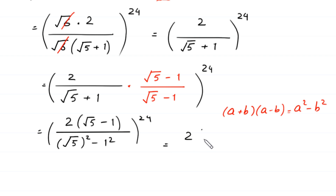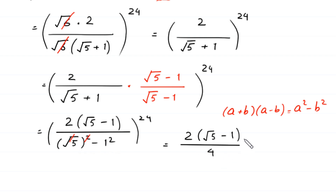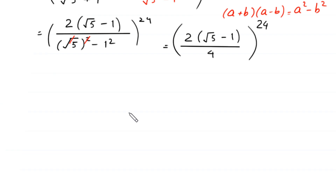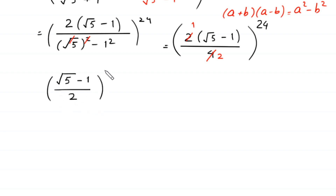Next, 2 times (square root of 5 minus 1) divided by — the square cancels with the square root — leaving 5 minus 1, which is 4, whole to the power 24. We simplify: 2 divided by 4 gives one-half, so we are left with (square root of 5 minus 1) divided by 2, whole to the power 24.